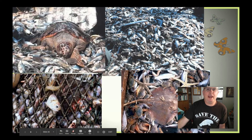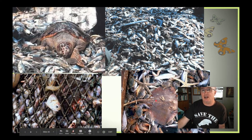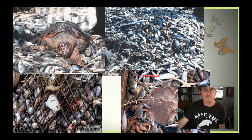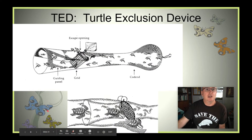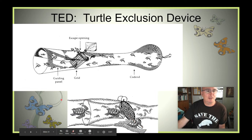Back to bycatch — these photos show shrimp nets full of sea turtles, many different fish species, stingrays, and sea stars. All this bycatch typically dies before it even gets to the deck of the shrimp boats. The turtle exclusion device allows material to flow down to the cod end while large animals like sea turtles get pushed out through a slot — a very important development for sea turtle conservation.